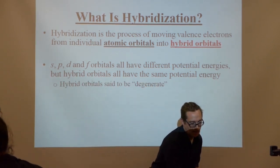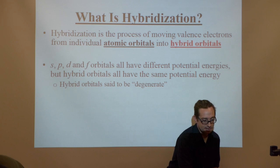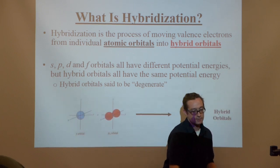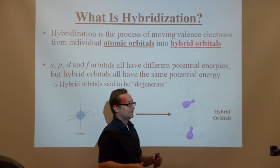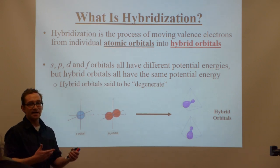What is hybridization? Hybridization is the process of moving valence electrons from individual atomic orbitals into hybrid orbitals. The s, p, d, and f orbitals all have different potential energies, but hybrid orbitals all have the same potential energy.